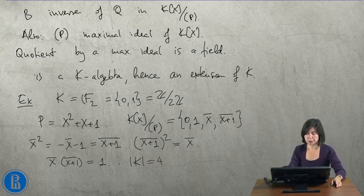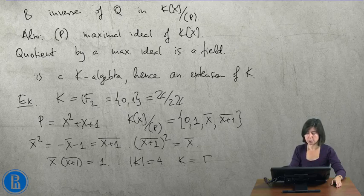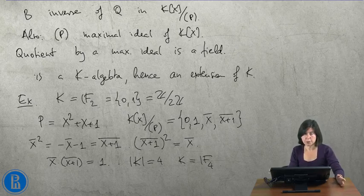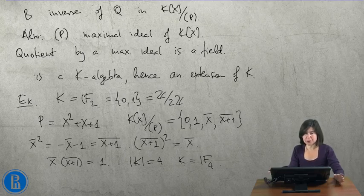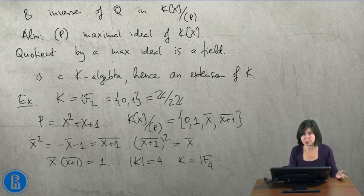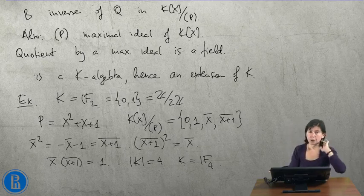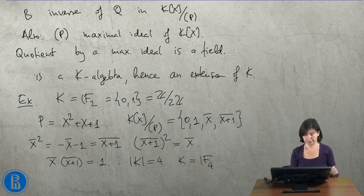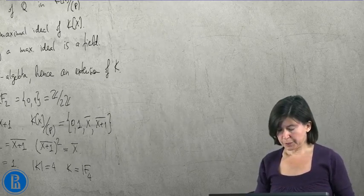The cardinality of K is 4. One writes then K equal to F_4. Well, this might be strange at first sight because we only know that K has four elements, and if you write F_4, you somehow mean that there is only one field of four elements. Well, it is true: there is only one field of four elements. In fact, all finite fields of the same cardinality are isomorphic, and we will see it very shortly.